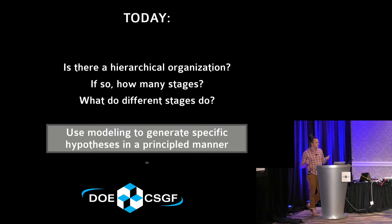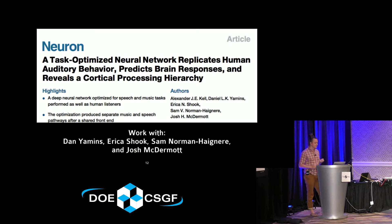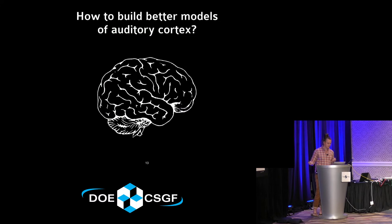A priori, it's not really clear what the different stages might be and what they might do. So rather than asserting hypotheses somewhat arbitrarily, we're going to build computational models to generate specific hypotheses about what these different stages may be and what's occurring across them. I had the pleasure of working with a bunch of collaborators, and this work was recently published.